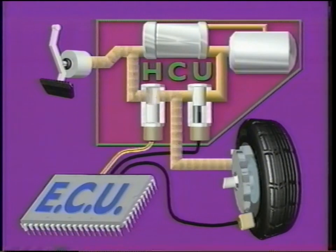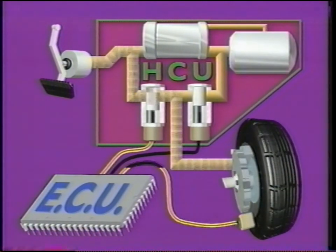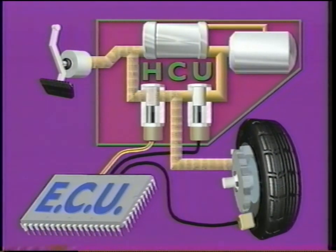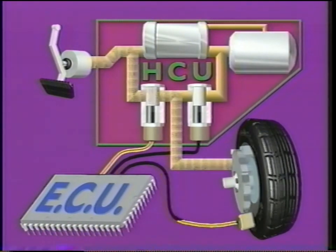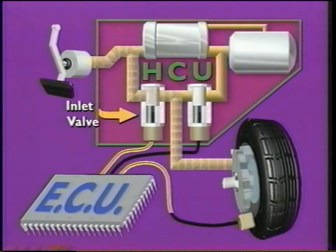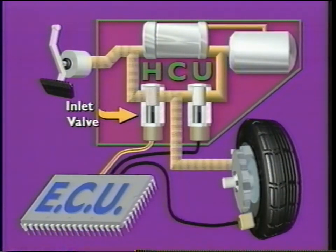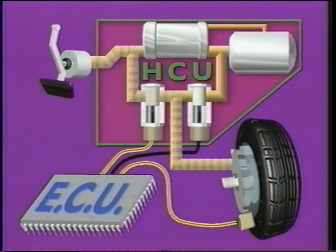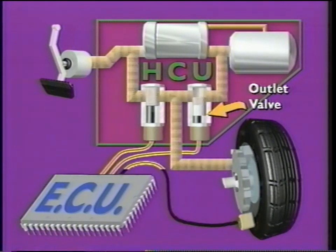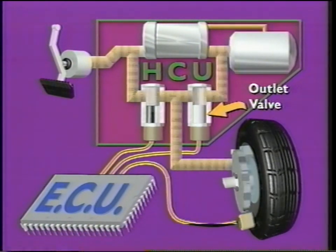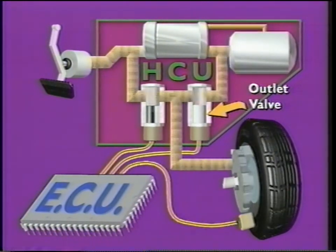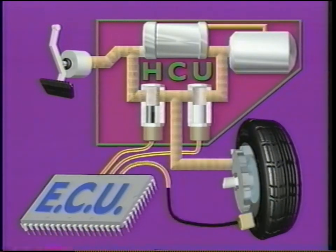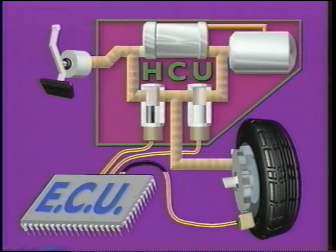During Anti-Lock Braking, the ECU senses that a wheel is decelerating too quickly, so it sends electrical signals to the HCU. These signals move the inlet valve, which prevents any further hydraulic pressure from reaching the affected brake. If the wheel continues to decelerate after hydraulic pressure has been interrupted, the ECU will signal the HCU to open the outlet valve. This allows fluid pressure in the brake line to be bled off, reducing pressure to the affected wheel, thus preventing it from decelerating too quickly.